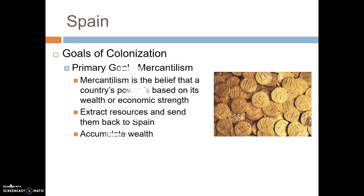Spain's goals for colonization really came down to two things. Their primary goal was an idea called mercantilism — the belief that a country's power is based on its wealth or its economic strength. What Spain did was try to extract resources from their colony and send those resources back to Spain to accumulate wealth. They were really interested in precious metals like gold and silver — a very one-way relationship where they just take and take from the colonies.